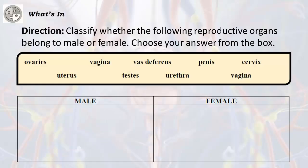Direction: Classify whether the following reproductive organs belong to male or female. Choose your answer from the box. The choices are: Ovaries, Uterus, Vagina, Testes, Vas Deferens, Urethra, Penis.